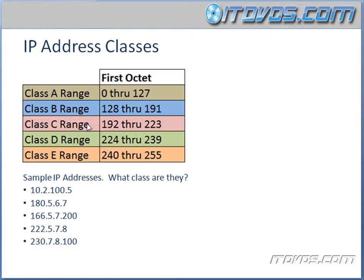What about 222.5.7.8? That is between 192 and 223. The first octet is 222, so that's a Class C address. And then finally, 230.7.8.100 — we can see that is a Class D address because 230 is between 224 and 239.